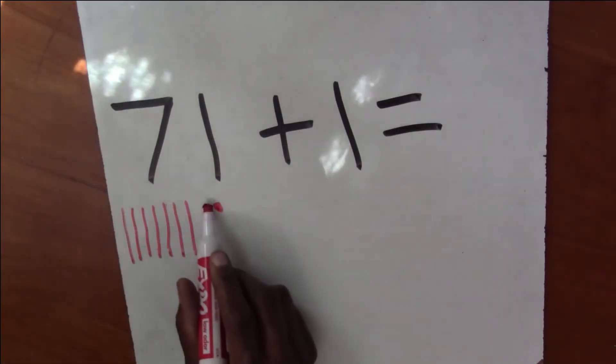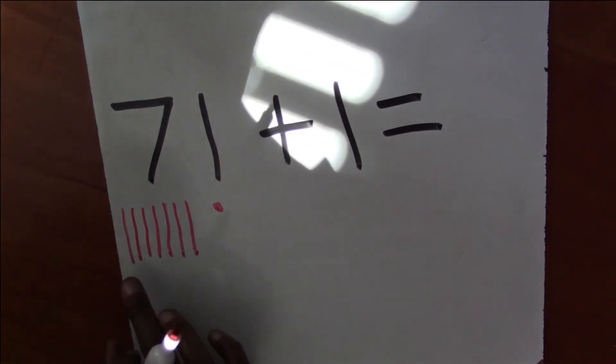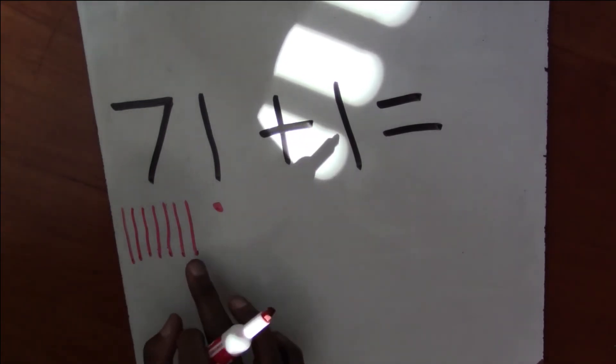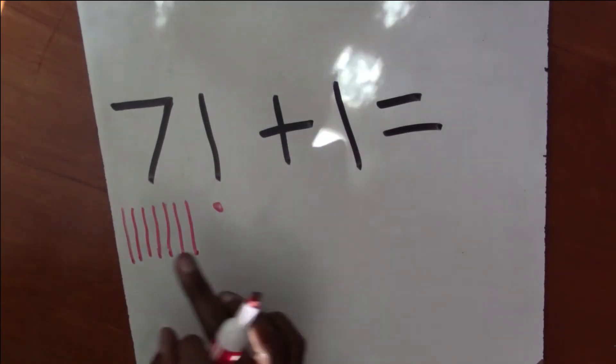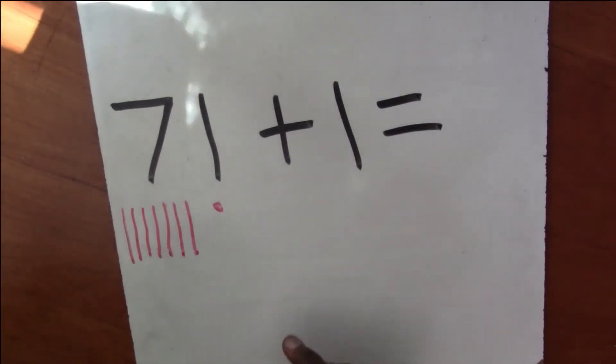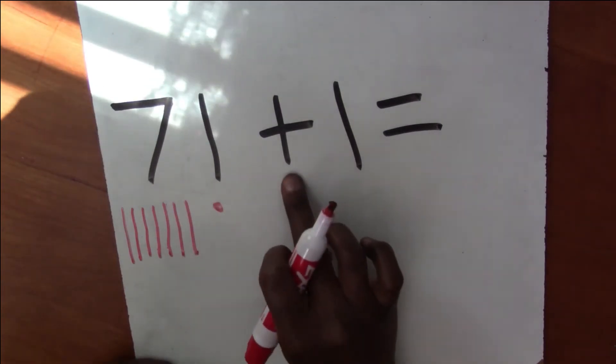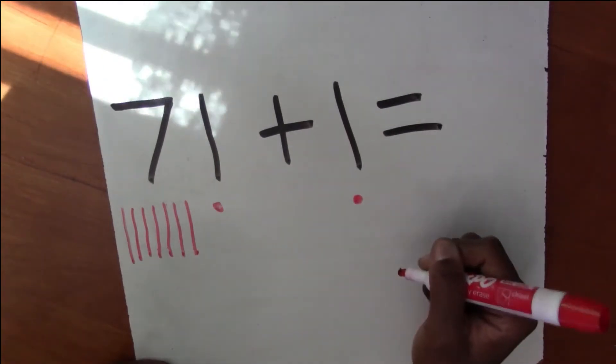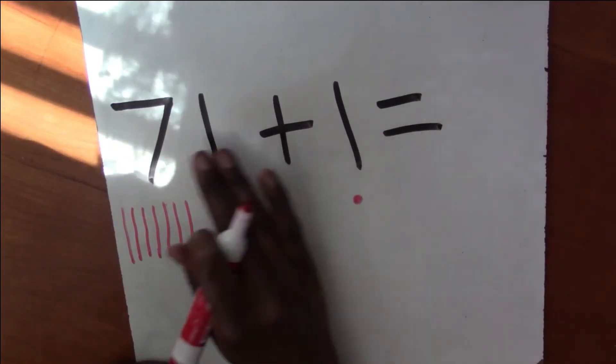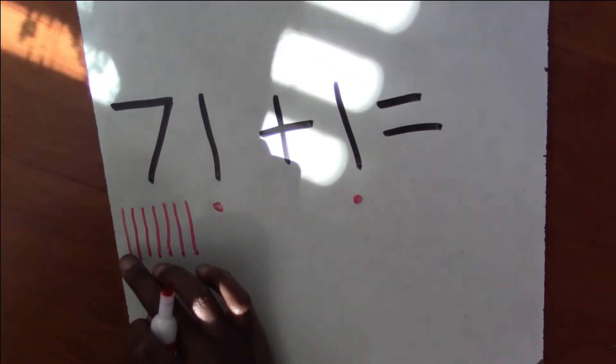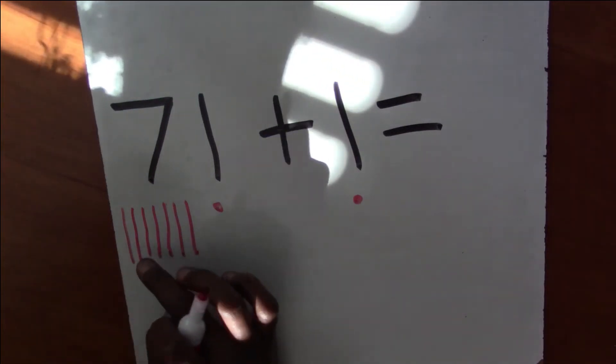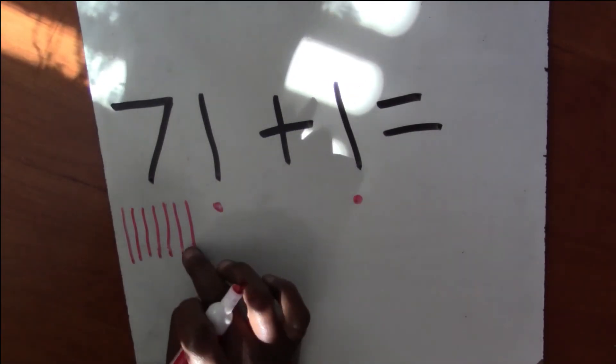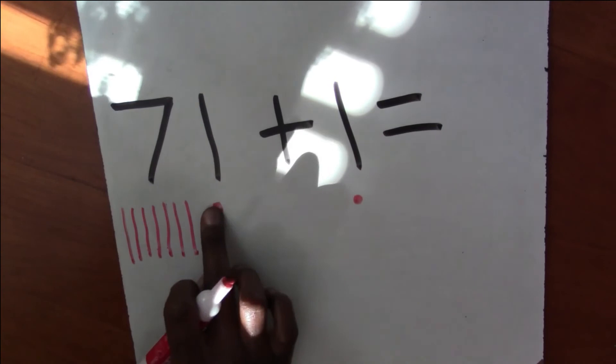Now I need my 1. So this should be 71. 10, 20, 30, 40, 50, 60, 70, 71. Good job. We did 71. Now I'm adding to it 1. Now let's count all of our 10 sticks all together. 10, 20, 30, 40, 50, 60, 70, 71, 72.